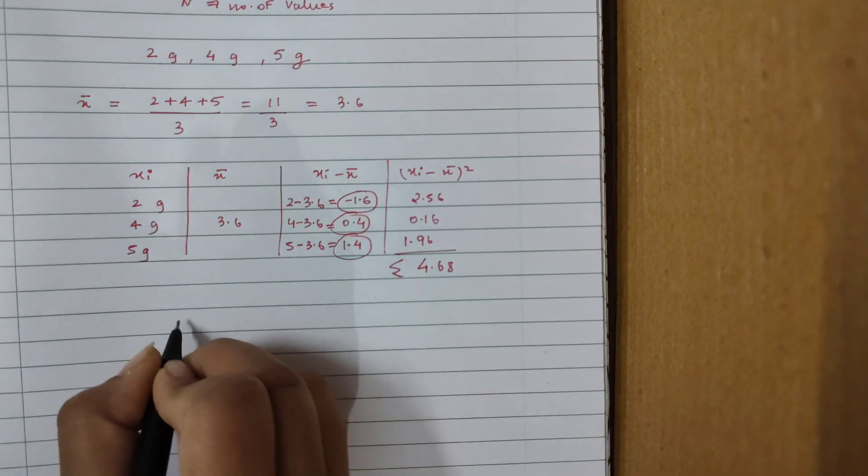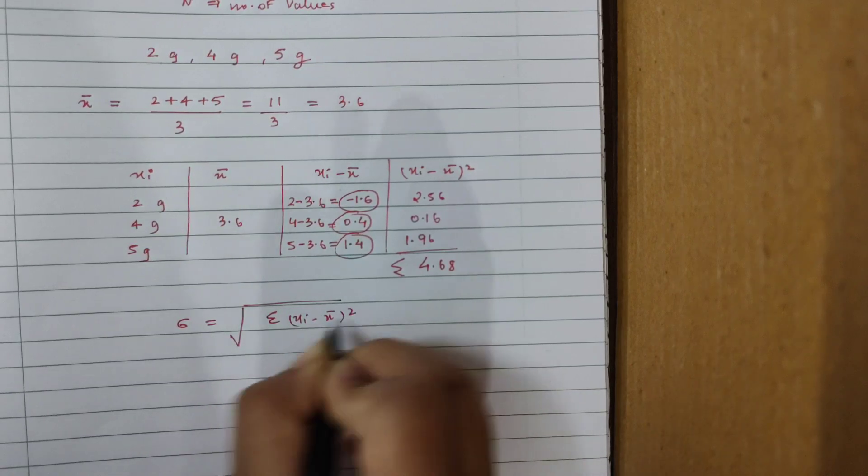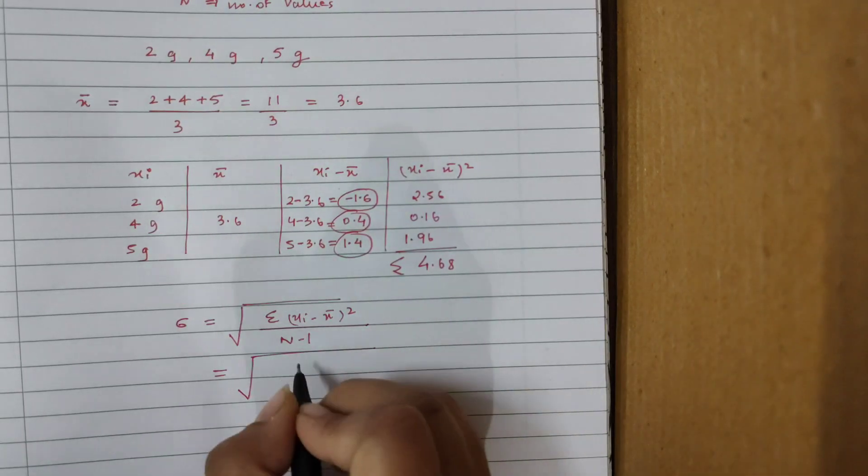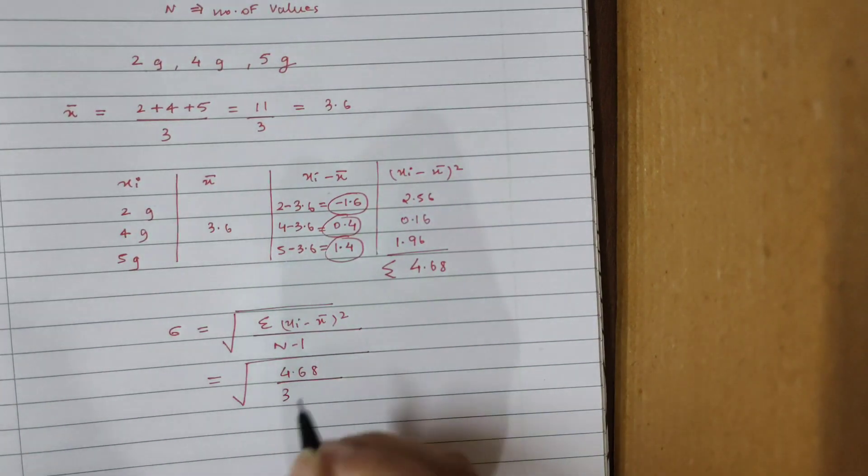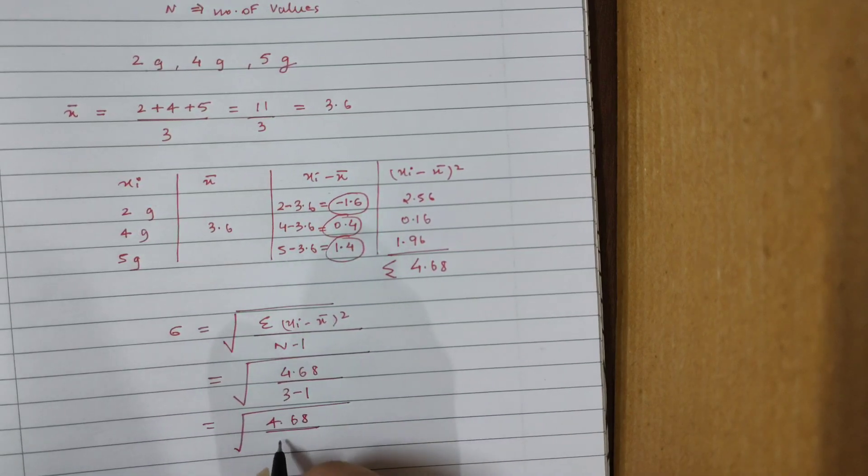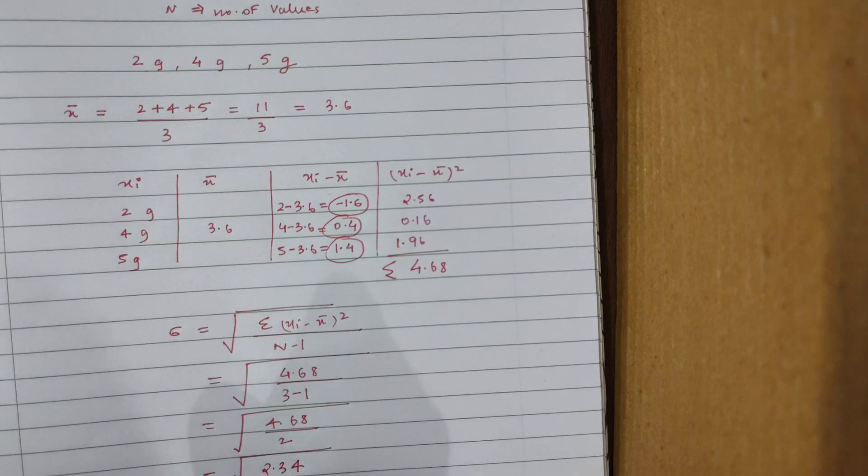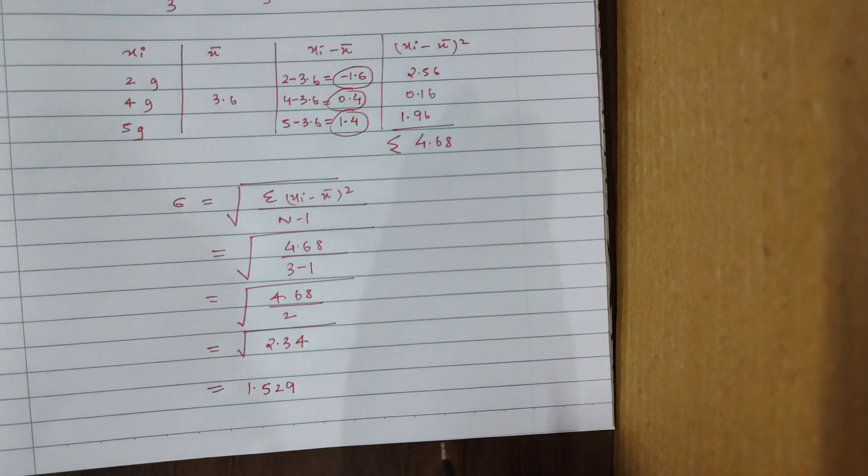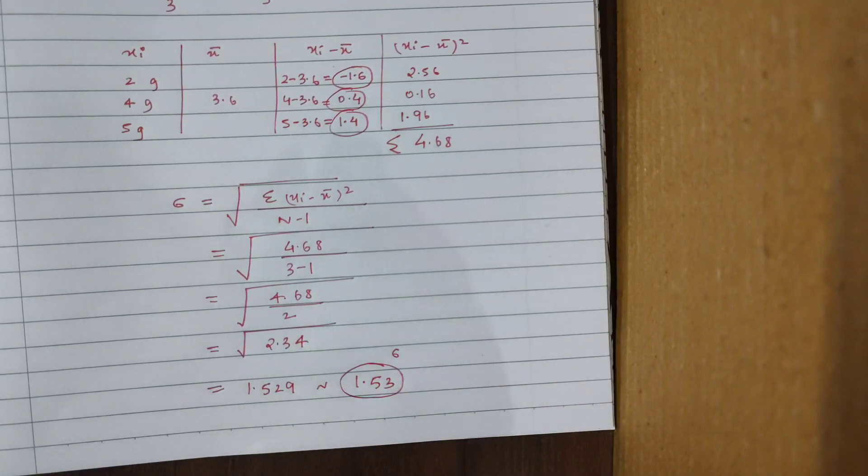Last step, I'm just going to rewrite the formula. Sigma is equal to square root of summation (xi minus x bar) squared divided by n minus 1. What is my summation value? First put the square root, never forget the square root. So my summation value is 4.68, divided by n minus 1. n is 3, 3 readings I have taken, number of values. So 3 minus 1. So this will be square root of 4.68 divided by 2. This will be root of 2.34, and root of 2.34 is equal to 1.529. This you can just round it up to 1.53. This is going to be my standard deviation.